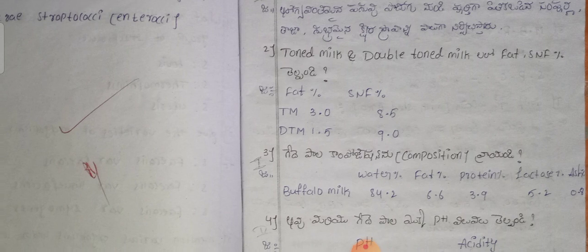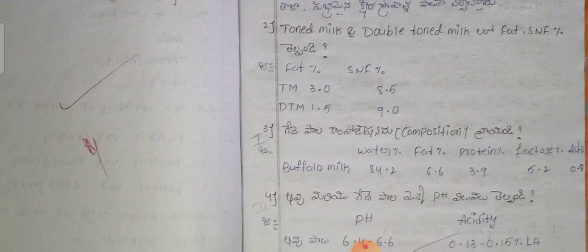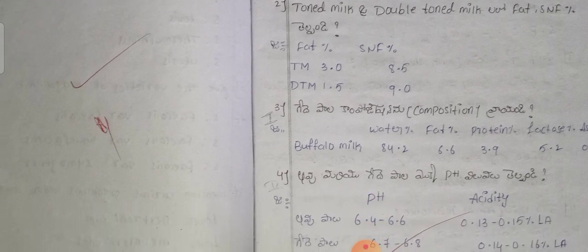Toned milk and double toned milk: for toned milk, fat is 3.5% and SNF is 8.5%. For double toned milk, fat is 1.5% and SNF is 9.0%.